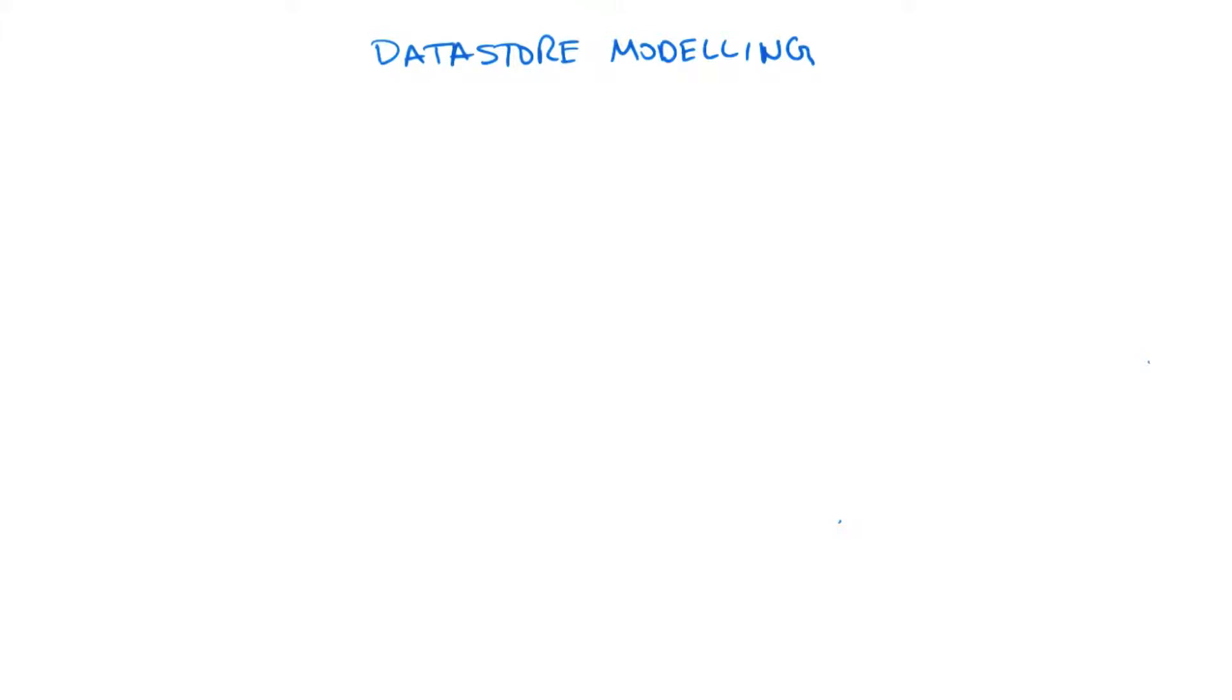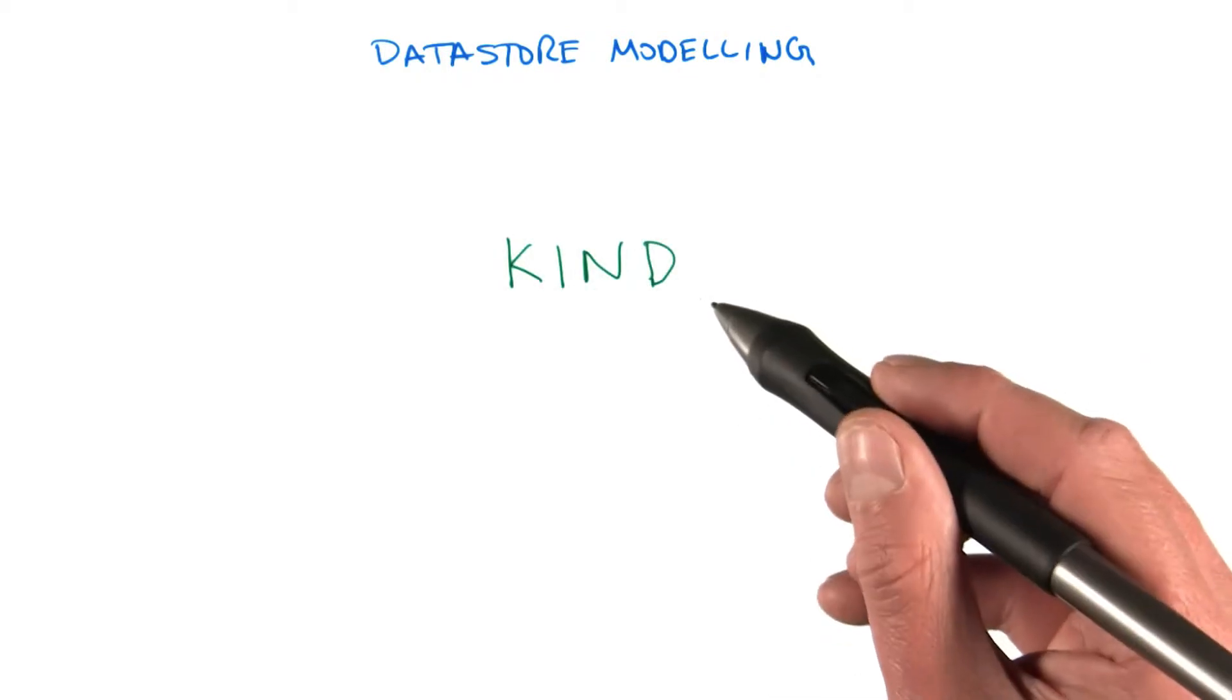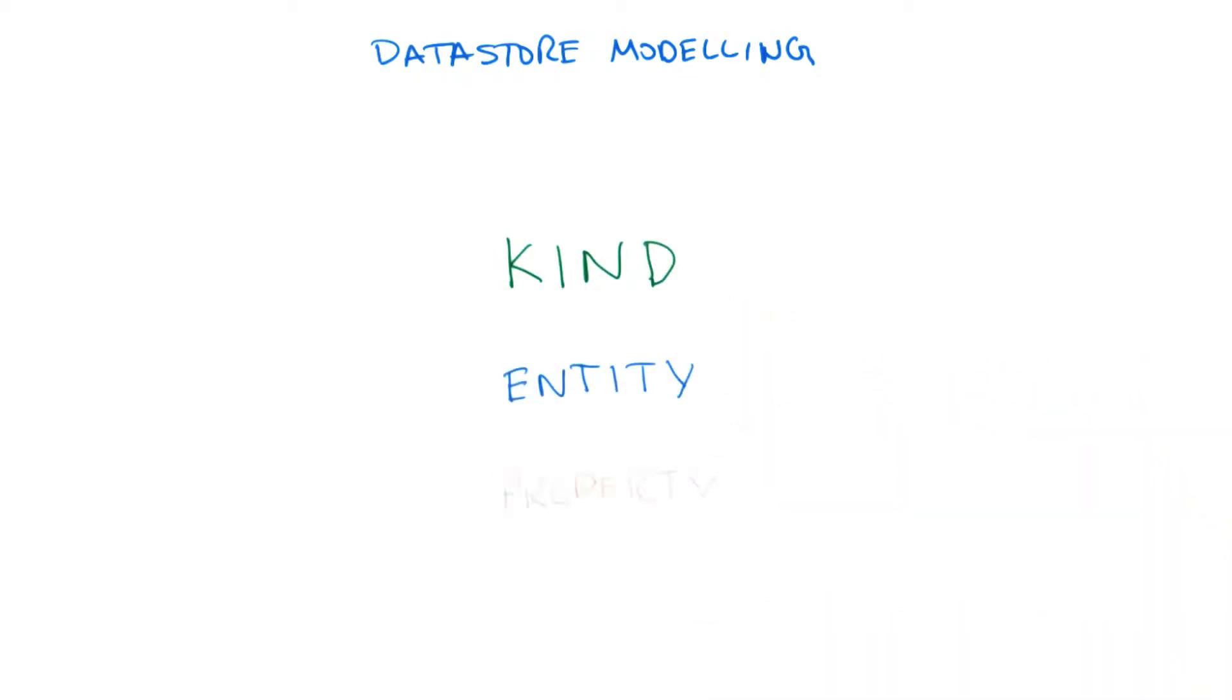So now it's time to cover the building blocks to use when doing data store modeling. They are kind, entity, and property.